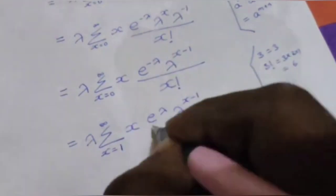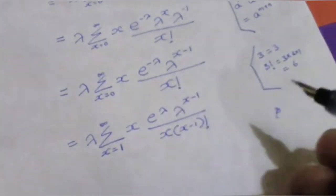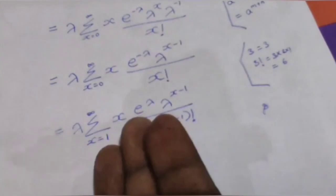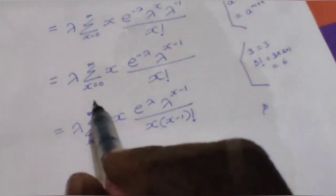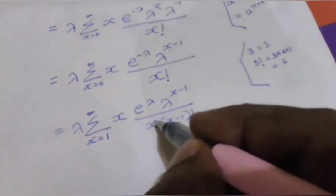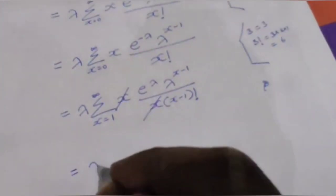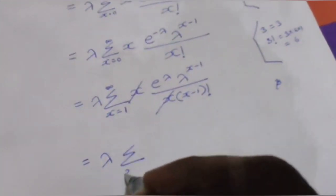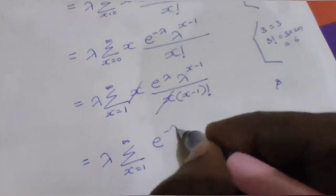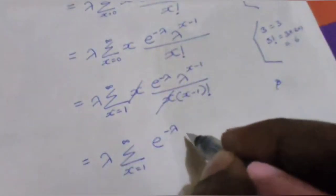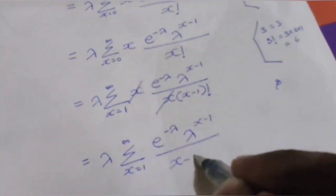We use x divided by x factorial equals 1 divided by x minus 1 factorial, since x times x minus 1 factorial equals x factorial. The original term is rewritten and x and x cancel, leaving lambda times summation from x equals 1 to infinity of e to the power minus lambda times lambda to the power x minus 1 divided by x minus 1 factorial.